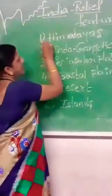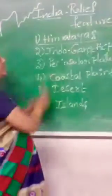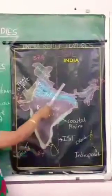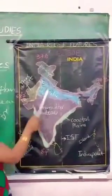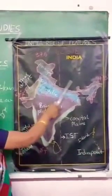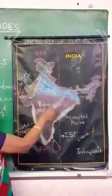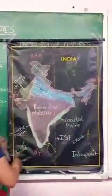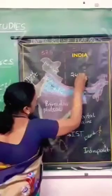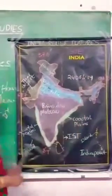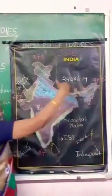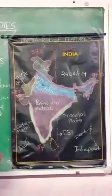Let us learn about the Himalayas in detail. The Himalayas are the largest mountains in the world. These ranges in Asia separate the Indian Plains from the Tibetan Plateau. The Himalayas stretch across India, China, Pakistan, Nepal, and Bhutan. They run from west to east in the form of an arch, spanning 2400 kilometers. The width of the Himalayas is 500 kilometers in the west and only 200 kilometers in the east. Himalaya means 'abode of snow.'